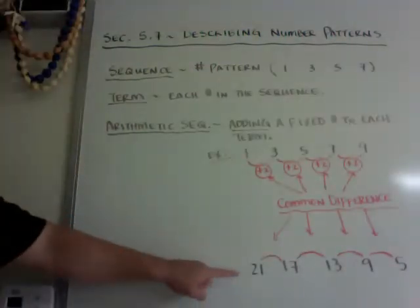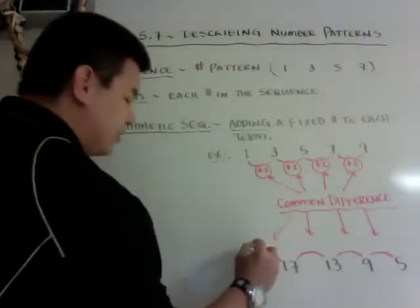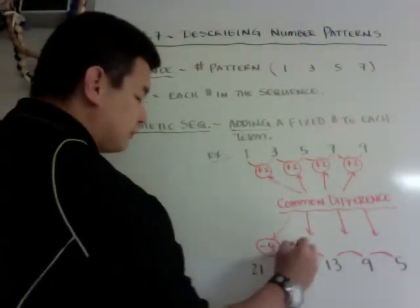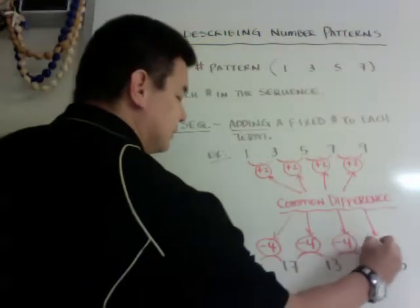Here's another set of numbers: 21, 17, 13, 9, and 5. But you can see that you subtract 4 from each term to get the next one.